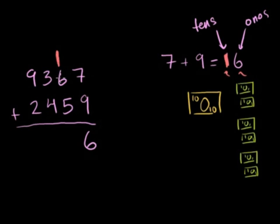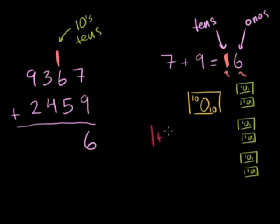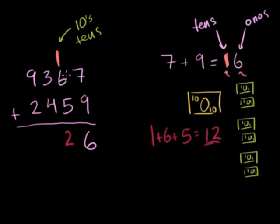So we have 6 ones in the ones place and carry that 1 ten into the tens place. Then add up everything in the tens place: 1 plus 6 plus 5. 1 plus 6 is 7, 7 plus 5 is 12. Write the 2 in the tens place — this is 12 tens, or 12 $10 bills. Carry the 1 into the hundreds place, because 12 $10 bills equals $120: one $100 bill and two $10 bills. You start at the right, add two numbers up; if it's a two-digit answer, carry the leftmost digit up to the next column.